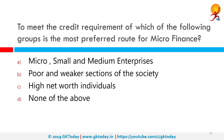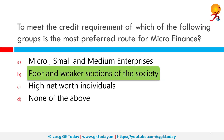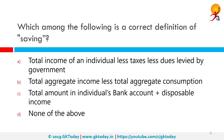To meet the credit requirement of which of the following groups is the most preferred route for microfinance? The correct answer is poor and weaker sections of society. Loans to poor people by banks have many limitations including lack of security and high operating costs. As a result, microfinance was developed as an alternative to provide loans to poor people with the goal of creating financial inclusion and equality.